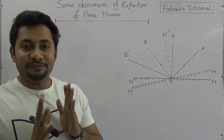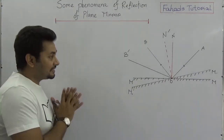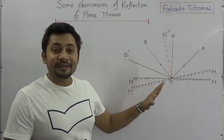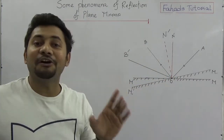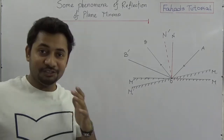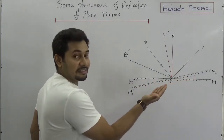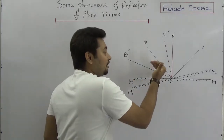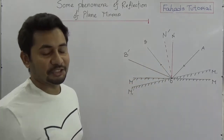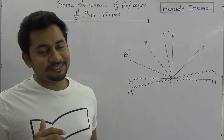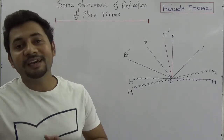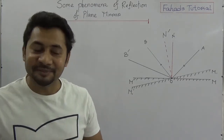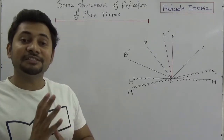The first phenomenon I shall be discussing in this tutorial is: keeping the directions of the incident ray unchanged, if we change the mirror by an angle, what is the angle the reflected ray will change? This is a very interesting phenomenon, and the answer is actually twice. Why does it happen? We can prove it in a geometric way.